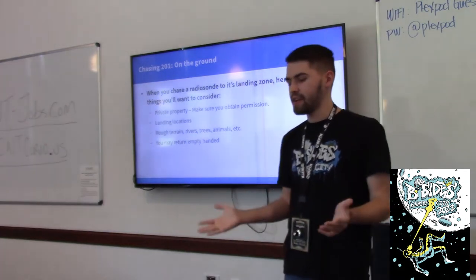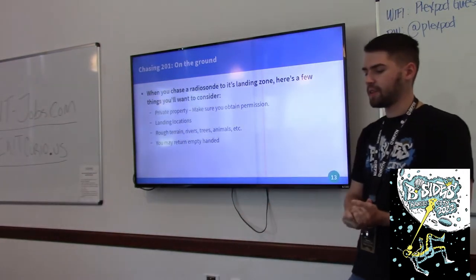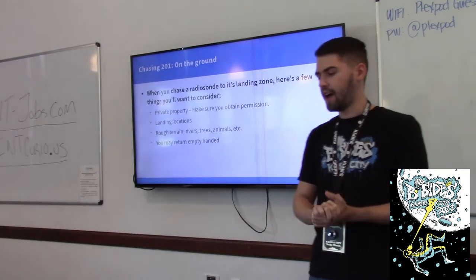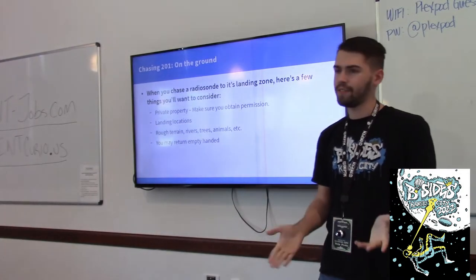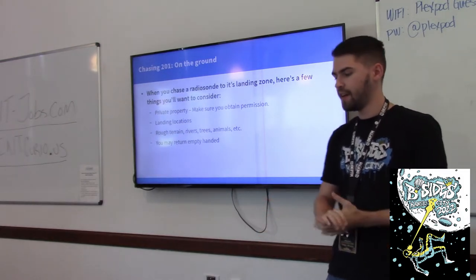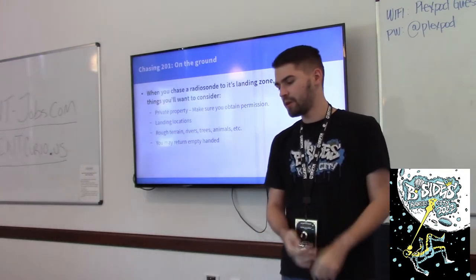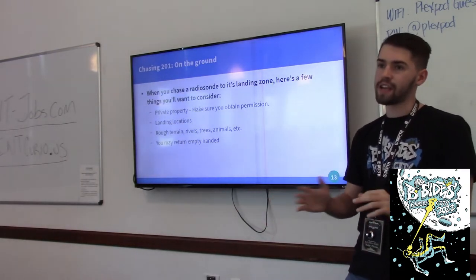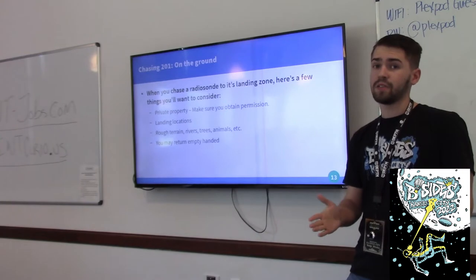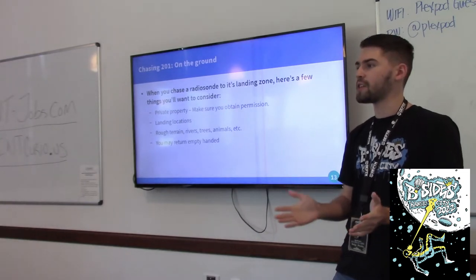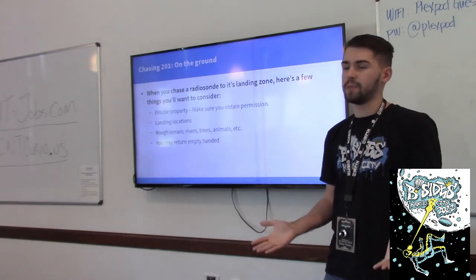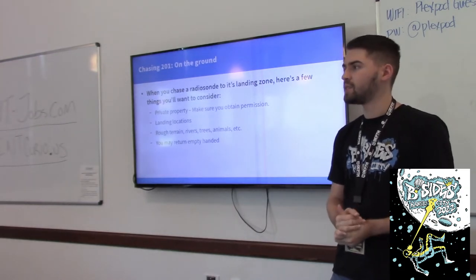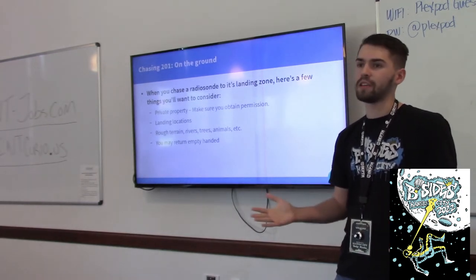When you get to the landing area of the radiosonde, you need to consider what you might encounter when you try to go get it. In some circumstances you'll have to get permission to enter wherever you're going. When finding the weather balloon, I'd highly recommend looking at a satellite view of the area so you can judge what kind of terrain you might face. There have been times when I had to cross through brush and creeks.